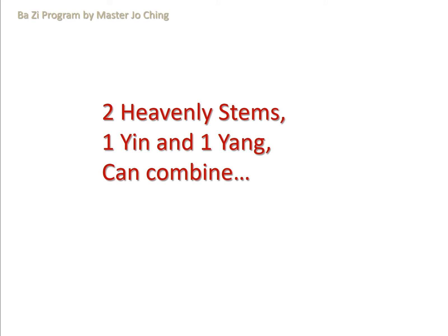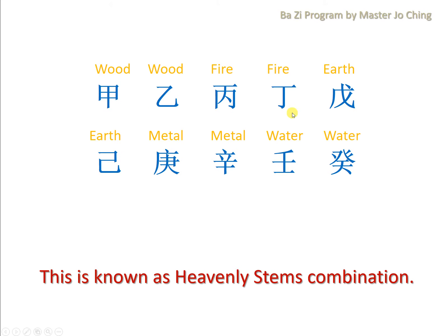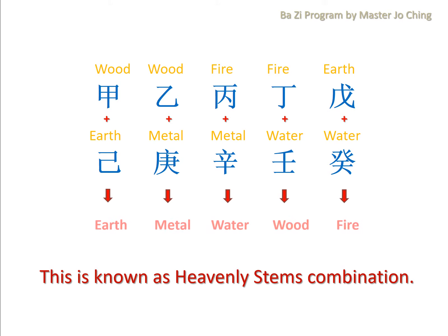In terms of heavenly stems arrangement, we can put one Yin and one Yang together, and they actually look like this. For example, if I put JIA and JI as a pair, YI and GENG as a pair — they actually form what is known as the heavenly stems combination, which has a resultant element. For example, JIA and JI combine with an inclination to transform to the element Earth. YI and GENG transform to Metal. BING and XIN produce Water. DING and REN produce Wood. WU and GUI is Fire.